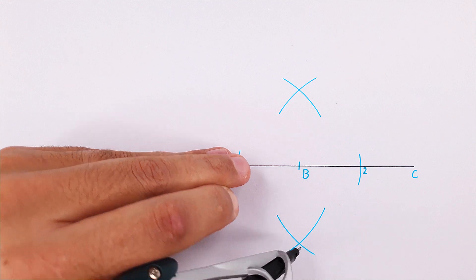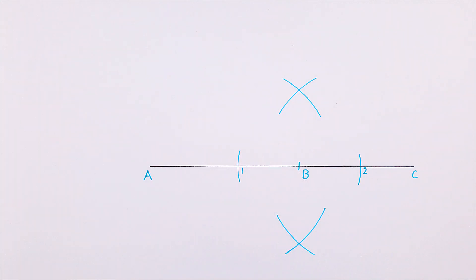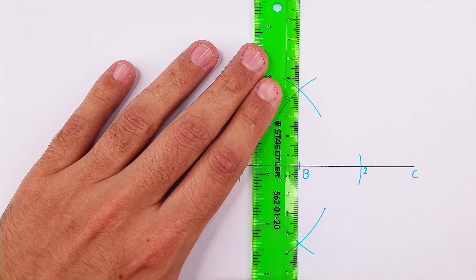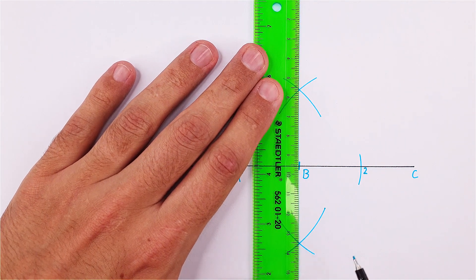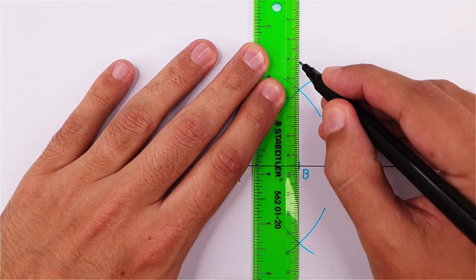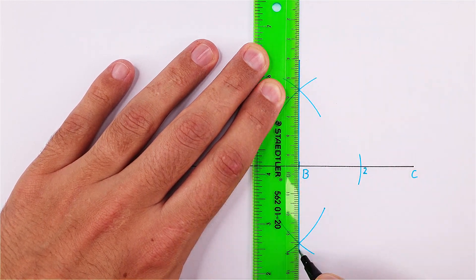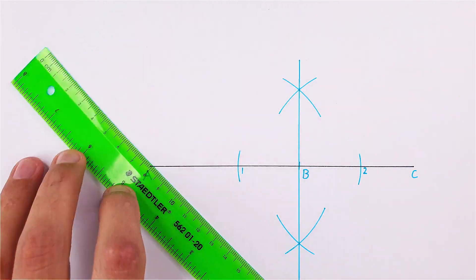Place your ruler on the two intersections and draw your perpendicular bisector. Then draw your perpendicular line on point B according to the specifications.